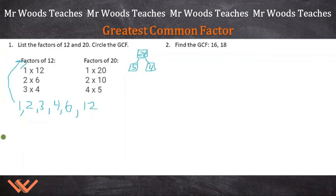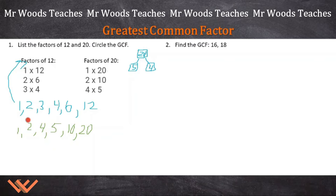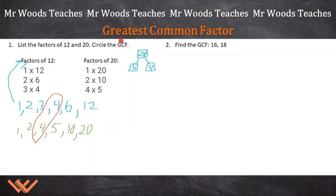Now let's look at the factors for 20: 1, 2, 4, 5, 10, 20. We're looking for the greatest common factor. We can see that 1 is a common factor, 2 is a common factor, and 4 is a common factor. There are no other common factors. So I'm going to circle 4 — it's the largest number that is a common factor between 12 and 20. Circle the GCF — there it is.